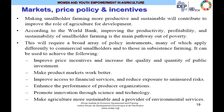The World Bank, in its 2008 World Development Report, asserted that improving the productivity, profitability, and sustainability of smallholder farming is a main pathway out of poverty. This will require a broad array of policy instruments. It can be used to improve price incentives and increase the quality and quantity of public investments, make product markets work better, improve access to financial services, reduce exposure to uninsured risks, improve the performance of producer organizations, promote innovation through science and technology, and make agriculture more sustainable and a provider of environmental services.